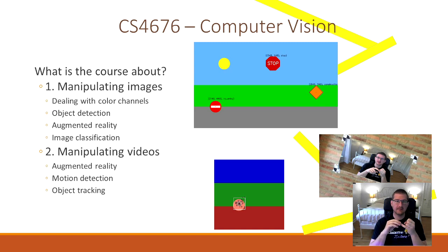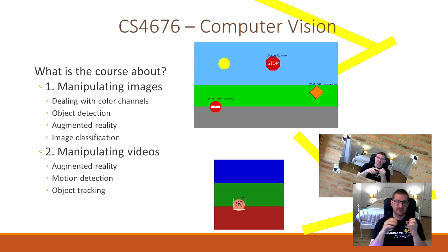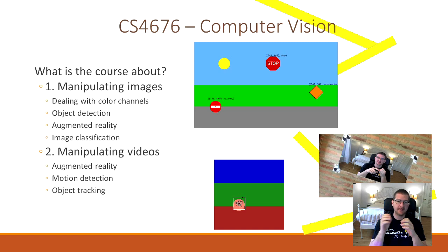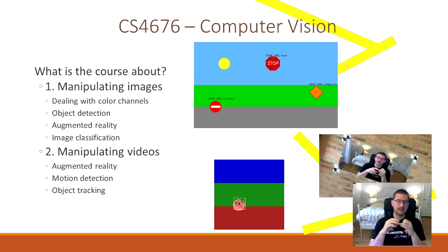Manipulating images means taking a picture and working with it — dealing with color channels, object detection, augmented reality, or image classification. You can see some of those in the pictures on the right. Video manipulation deals with augmented reality in video, motion detection, and object tracking.